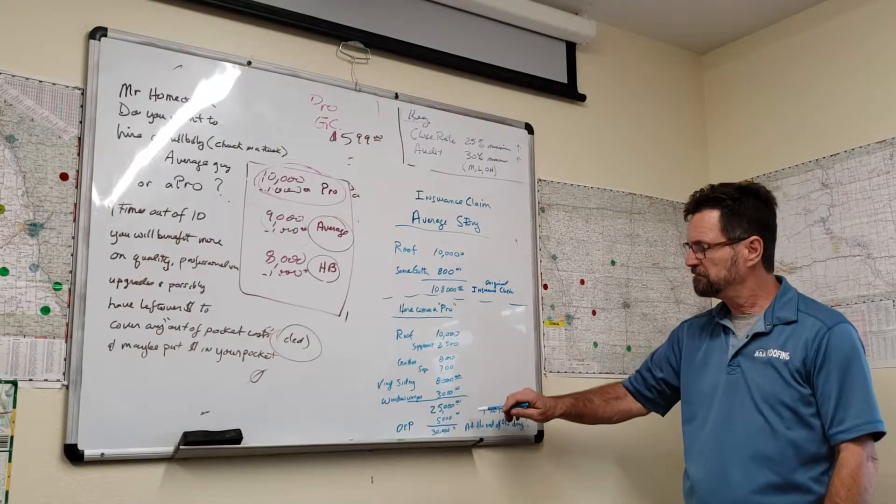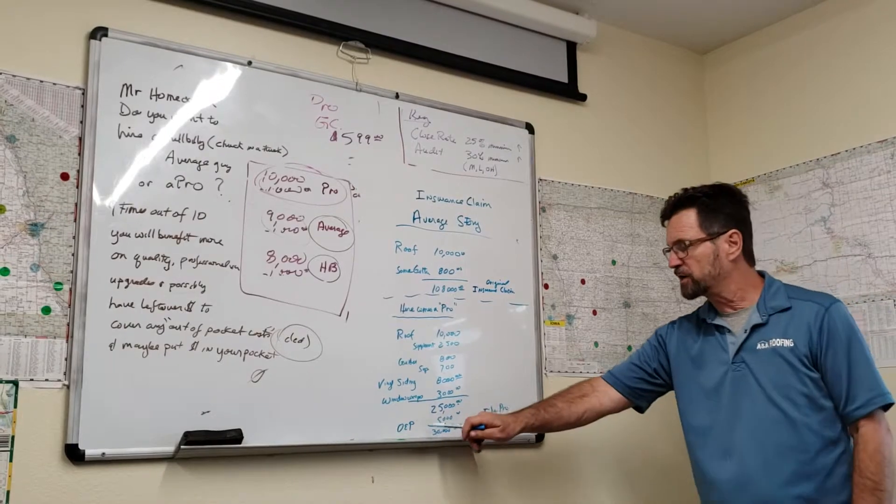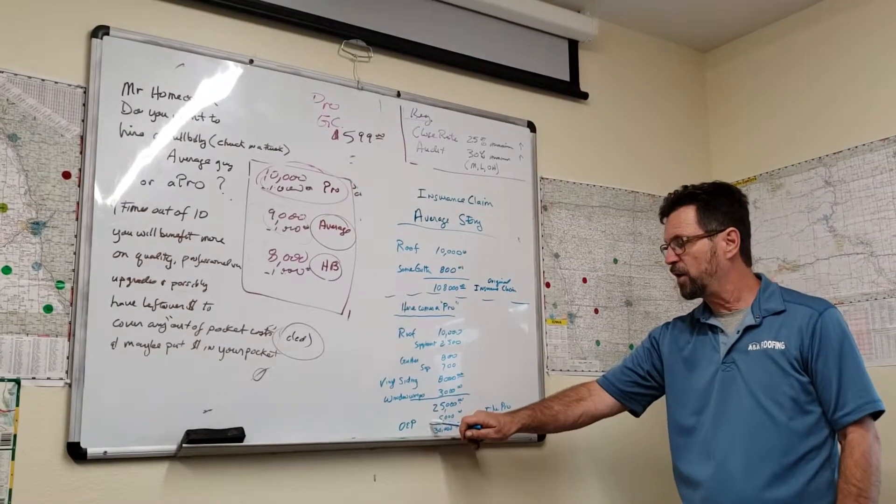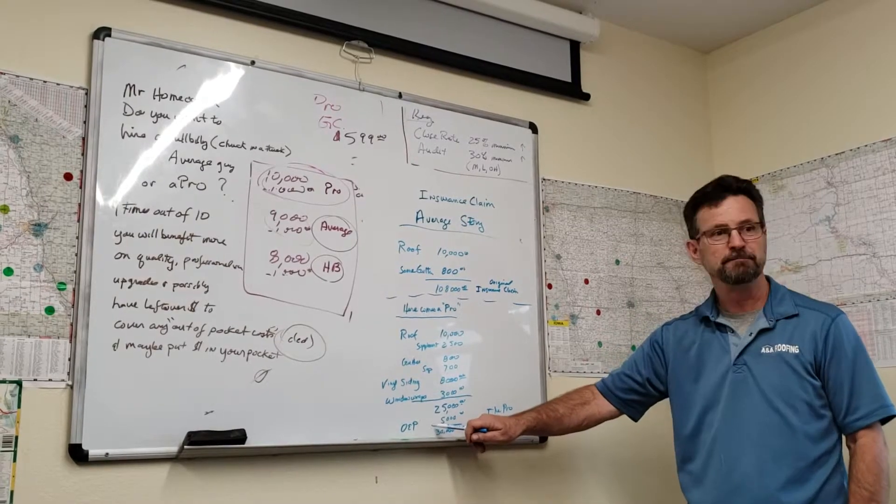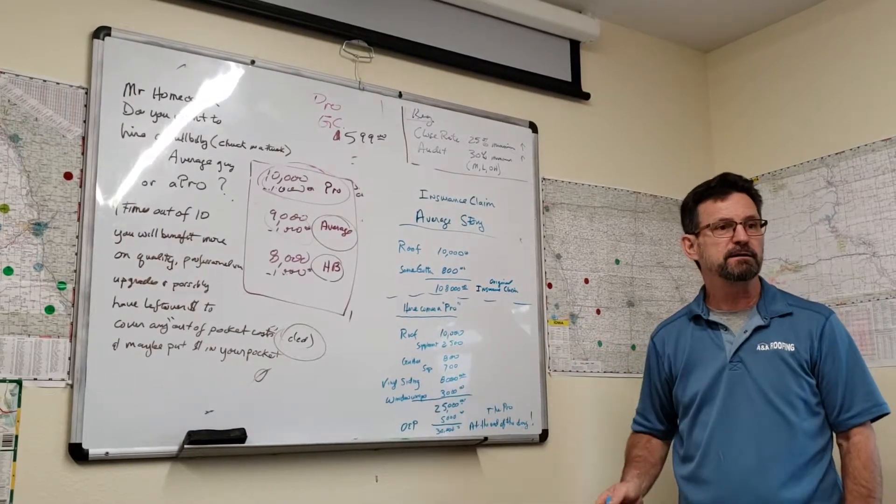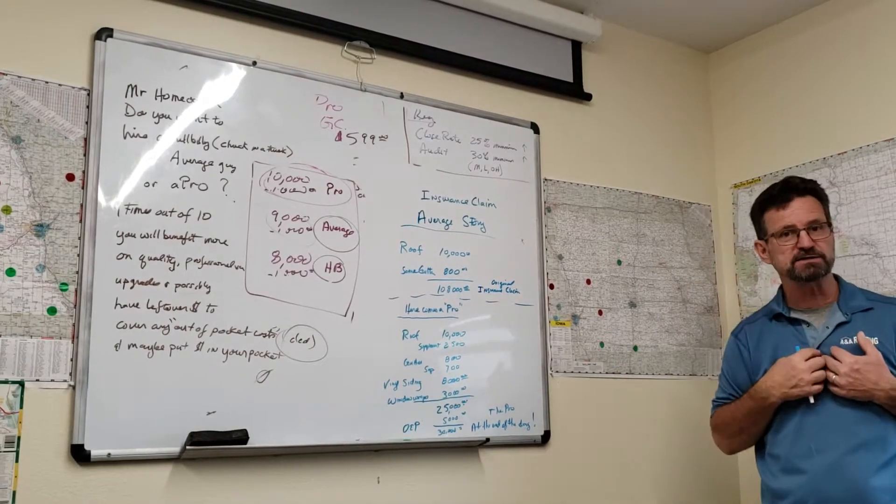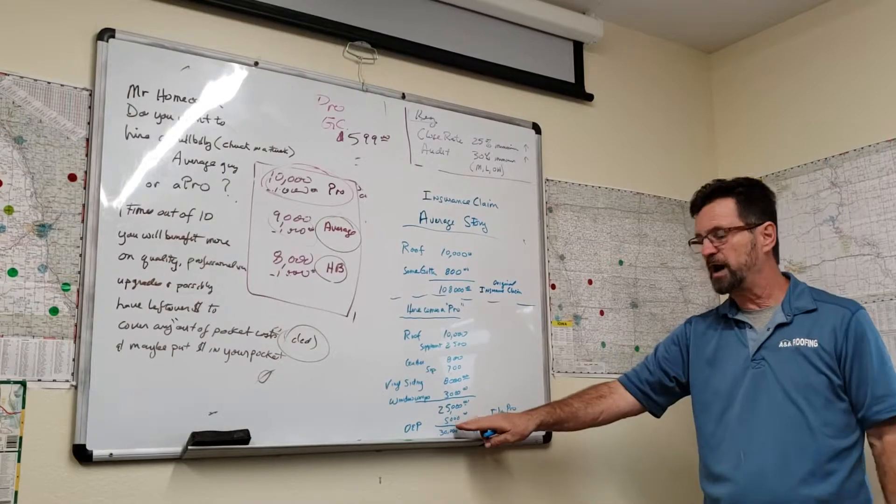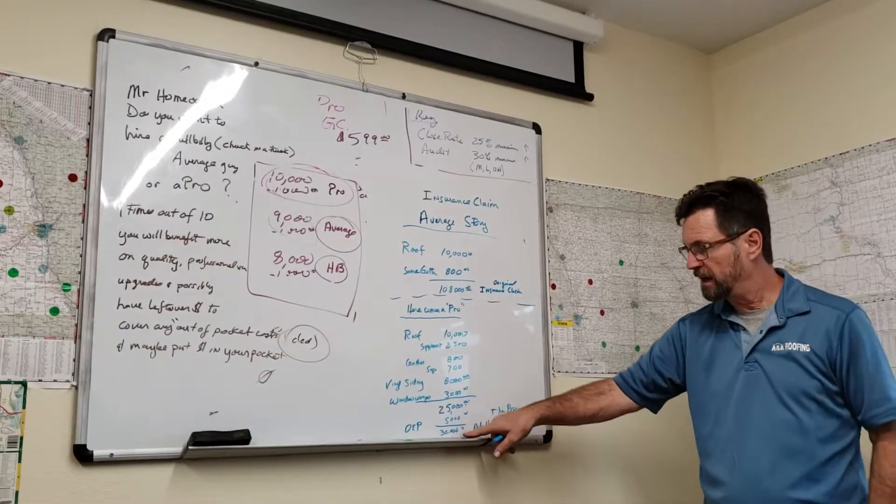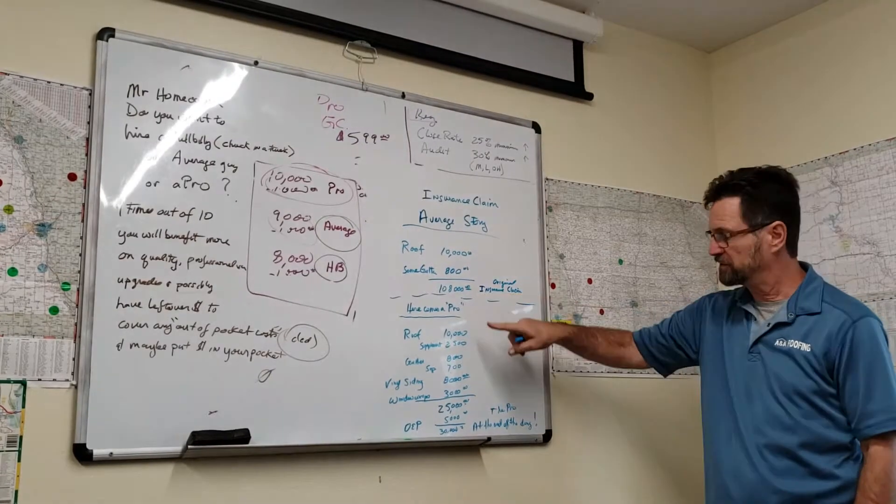When we were done, we ended up with a $25,000 claim. And as general contractors, we are paid overhead and profit because you can't run three or four trades profitably with insurance pricing and make a profit. So the insurance companies will pay us, professional general contractors, an extra overhead and profit to manage the project. Now the claim is a $30,000 claim. We went from $10,800 to $30,000.